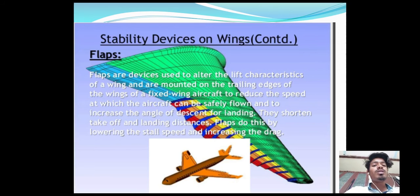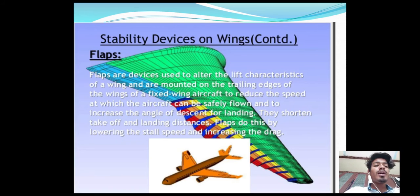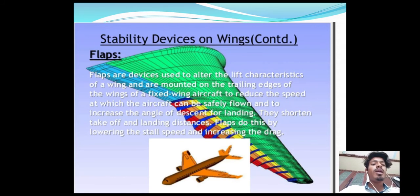Flaps are devices used to alter the lift characteristics of a wing and are mounted on the trailing edges of the wings of a fixed-wing aircraft to reduce the speed at which the aircraft can be safely flown and to increase the angle of descent for landing. They shorten takeoff and landing distances by lowering the stall speed and increasing drag.